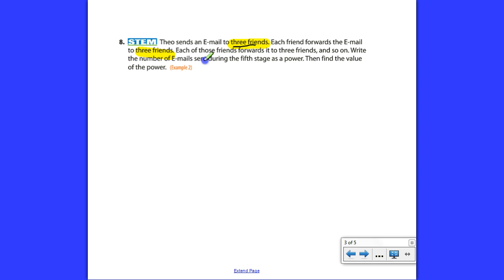We have Theo sending emails to three friends. Each friend forwards the email to three friends. So Theo sends one email to three different friends, and then they forward it to three friends. So he sends it to three friends, and then they send it to three friends. Each of those three friends forwards it to three more friends, and so on.